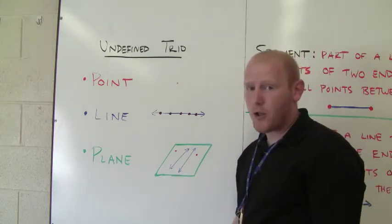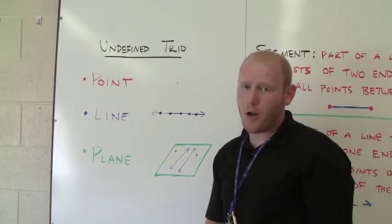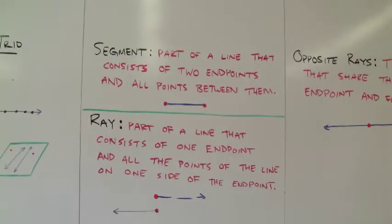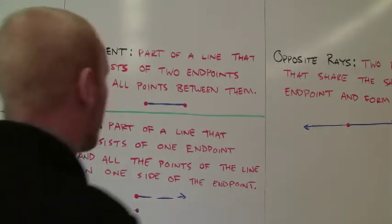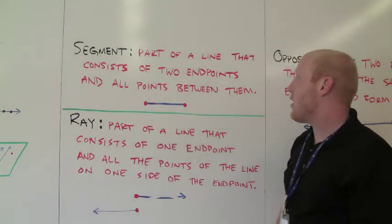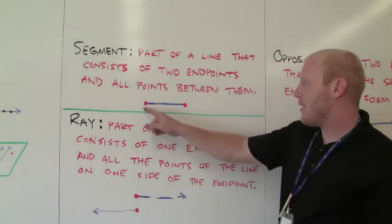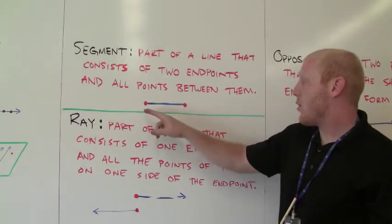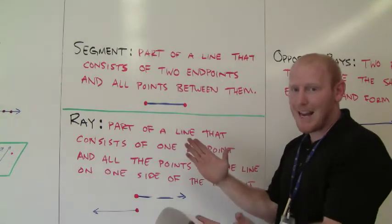So these are our three undefined terms, which we call the building blocks for all our other definitions, which we're now going to go into. The first definition we're going to talk about is segment. What is a segment? It's part of a line that consists of two endpoints and all points between them. As we see here, I have my two endpoints in red and then part of a line in blue — two endpoints with the line contained between them.